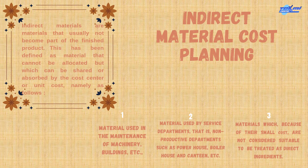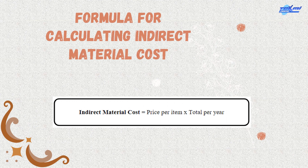Indirect Material Cost Planning. Indirect materials are materials that usually do not become part of the finished product. This has been defined as material that cannot be allocated but which can be shared or absorbed by the cost center or unit cost, namely: 1. Material used in the maintenance of machinery, buildings, and so forth. 2. Material used by service departments, i.e. non-productive departments, such as powerhouse, boiler house, and canteen. 3. Materials which, because of their small cost, are not considered suitable to be treated as direct ingredients. This is the formula for calculating indirect material cost.